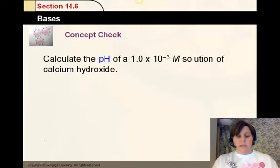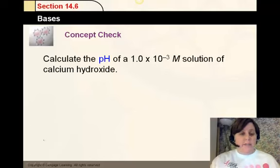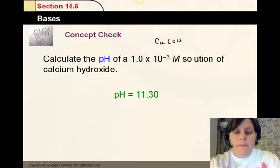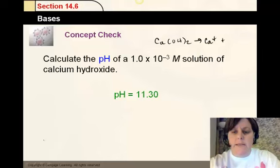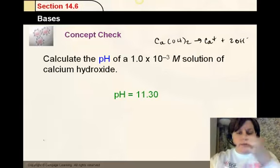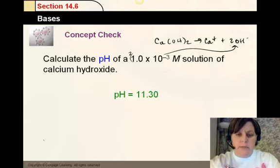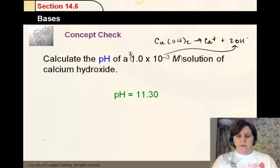Here's another one. Calculate the pH of 1 times 10 to the negative 3 molar solution of calcium hydroxide. And you might say, well, same exact number, pOH of this would be 3, and it would also be 11. But it isn't. If we check, you can see it's 11.30. Where's that 0.3 coming from? Well, calcium hydroxide produces calcium ions and 2 hydroxide ions. So therefore, the concentration of OH is 2 times that. And therefore, when you do the negative log of 2 times 10 to the negative 3, and then you subtract it from 14, you get 11.30.